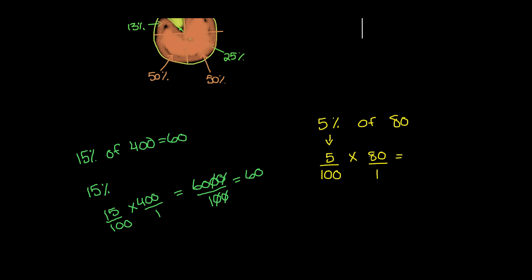So now all we have to do is multiply. 5 times 8 is 40, plus that zero, so 400. And then 100 times 1 is 100. And then we divide 400 by 100, which gives us 4. So we know that 5% of 80 is 4.